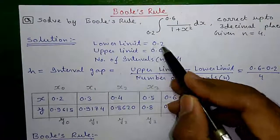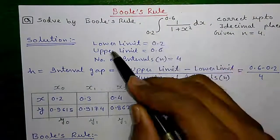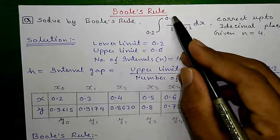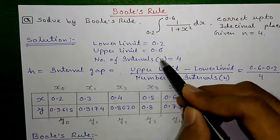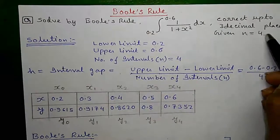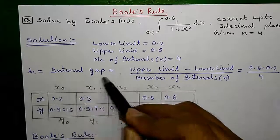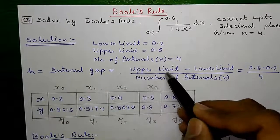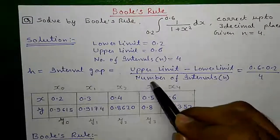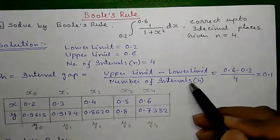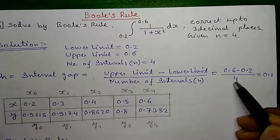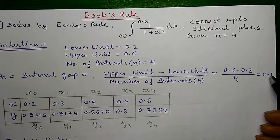Our lower limit is 0.2, upper limit is 0.6, number of intervals n equals 4 given in the question. So, h or interval gap is given by upper limit minus lower limit divided by the number of intervals, which is 0.6 minus 0.2 divided by 4 equals 0.1.